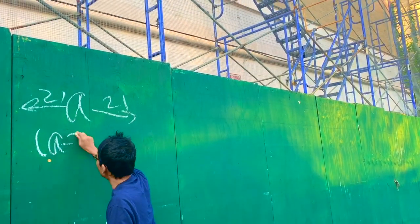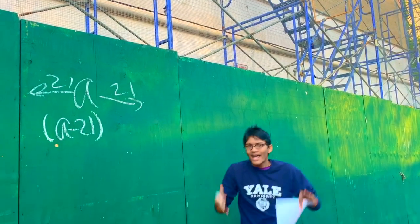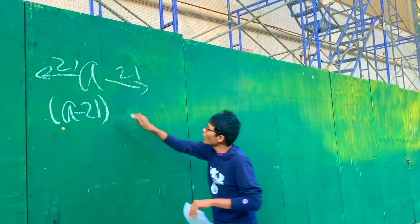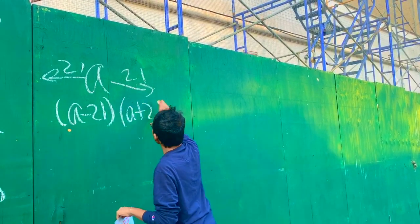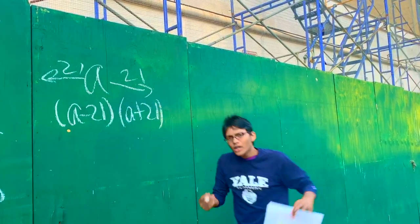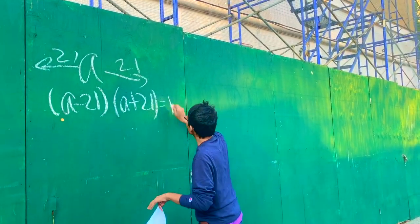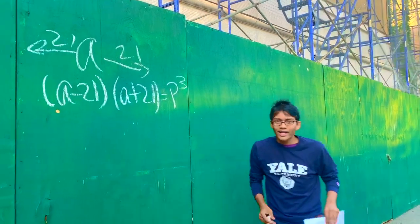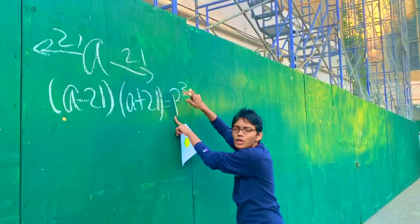That number turns out to be a prime number cubed. So how can we quantify that? That's a² - 441, which equals a² minus 21 times a plus 21, and that's going to be equal to some cube of a prime number, p³.